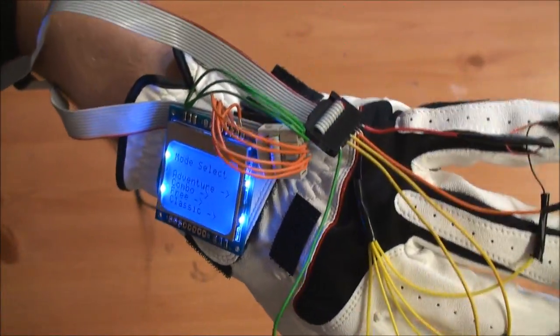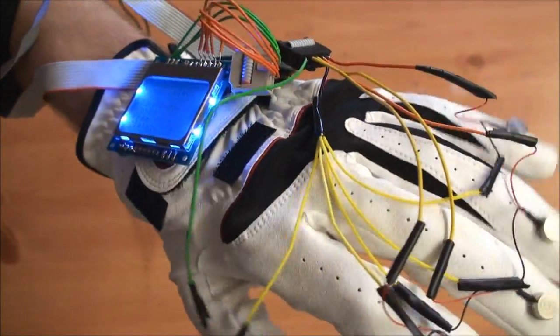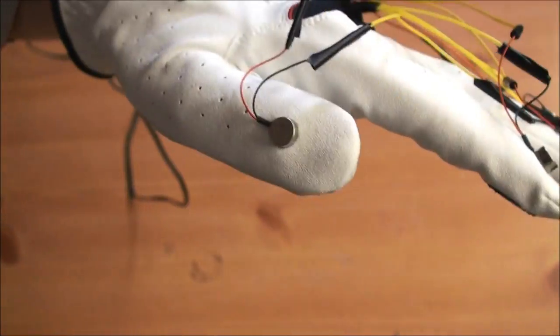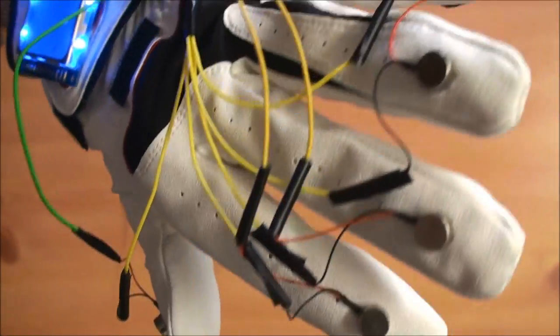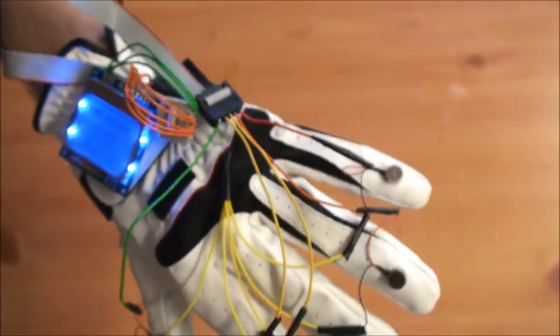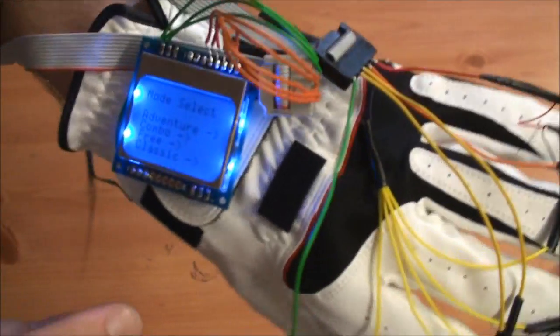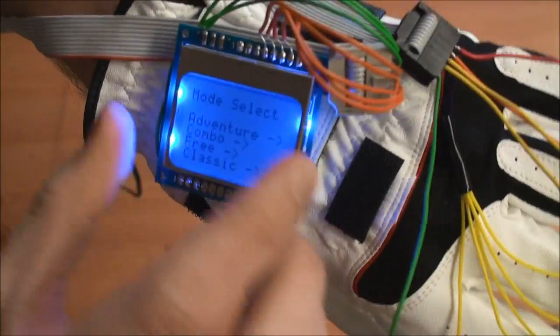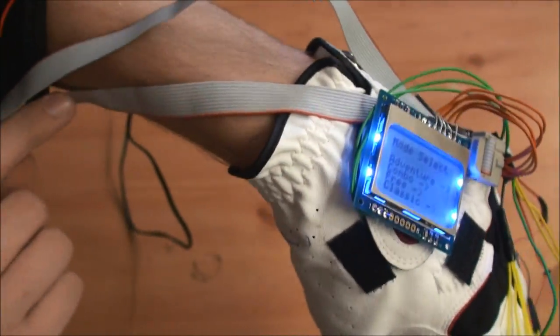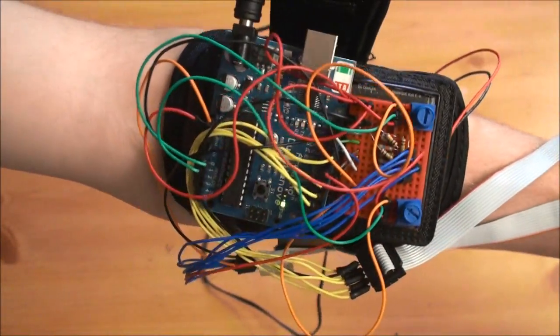And going over the actual hardware of this a little bit real quick, as you can see here, we have one pager motor per finger all wired into this cable right here going down to the armband. We also have the LCD wired into a second cable going down to the armband, which we can see right here.